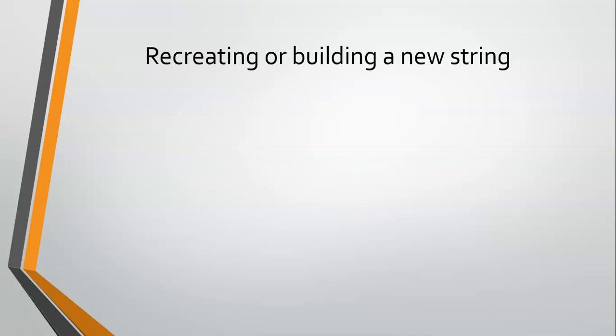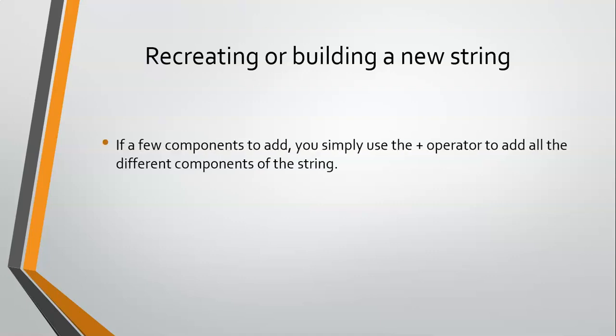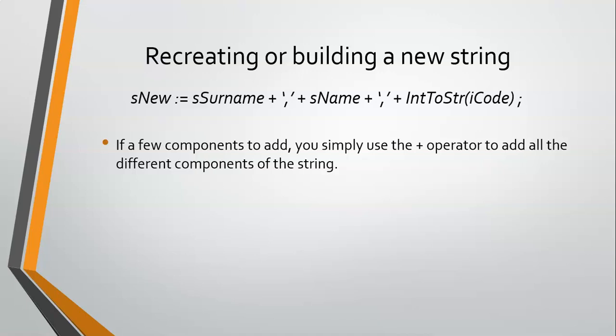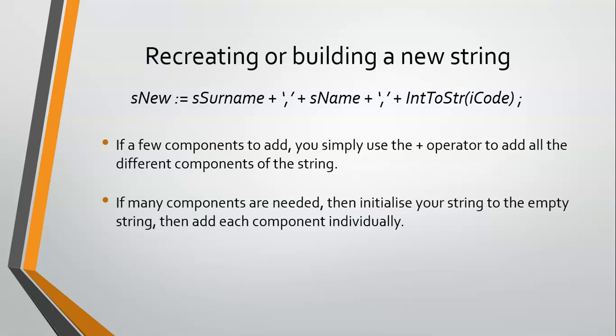The last technique is when we are creating, recreating, or building a new string — when we're adding on things and constructing a string. It's very easy if we've got a few components: we can just use the plus operator to add the different parts. For example, if we want to build a comma-separated string, we can say S-new equals the surname variable plus a comma plus the name variable plus another comma plus the code converted from integer to string. The problem comes when you've got lots of things to add, or a loop that's repeatedly adding things. In that case, we need to initialize our string to the empty string and then add on components individually.